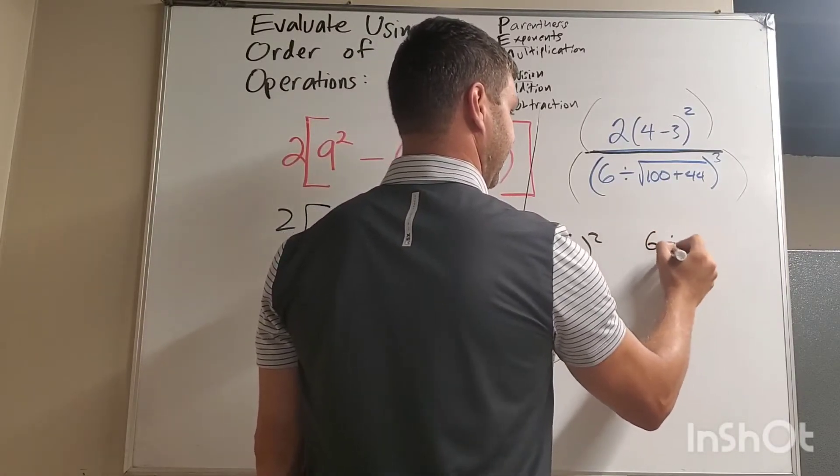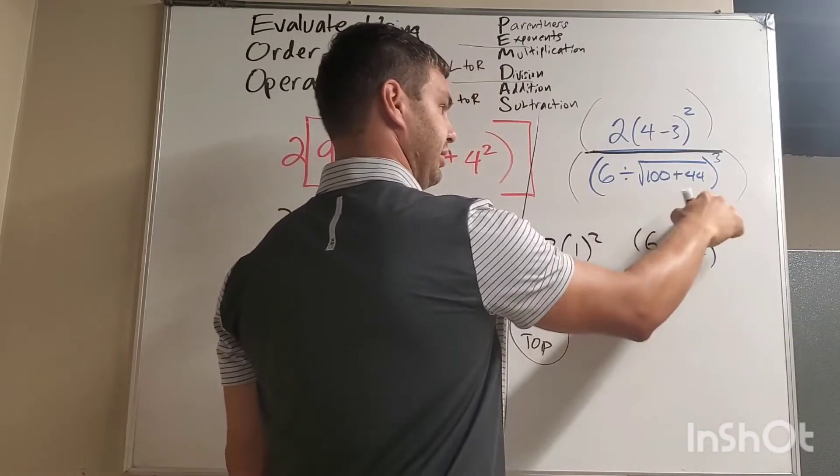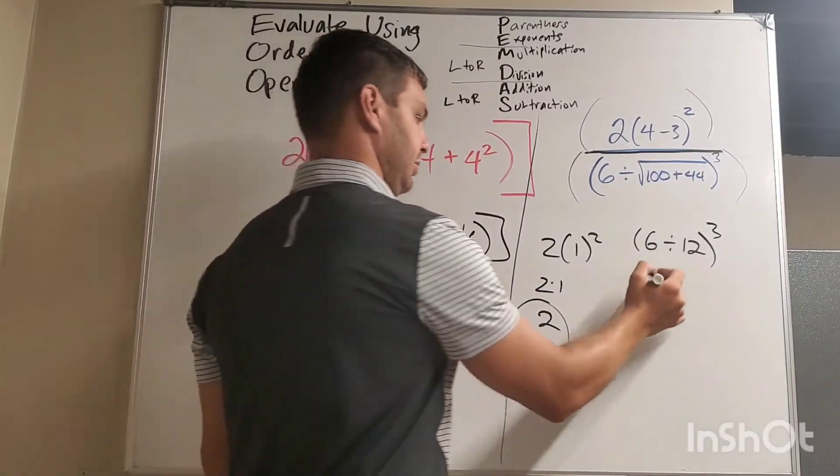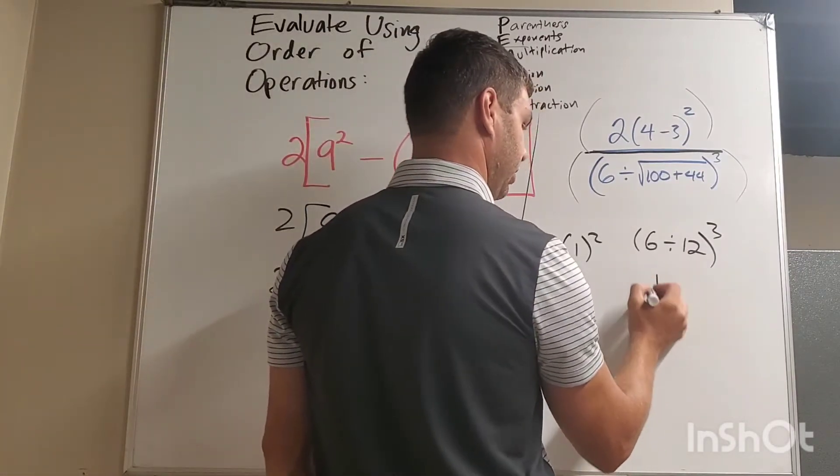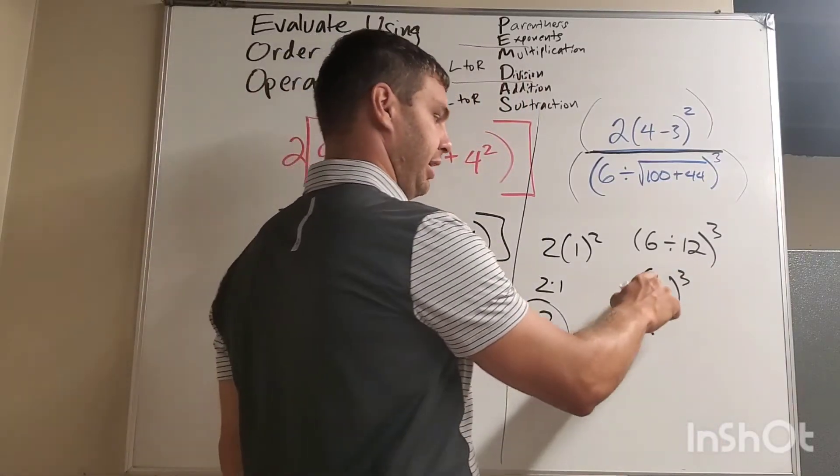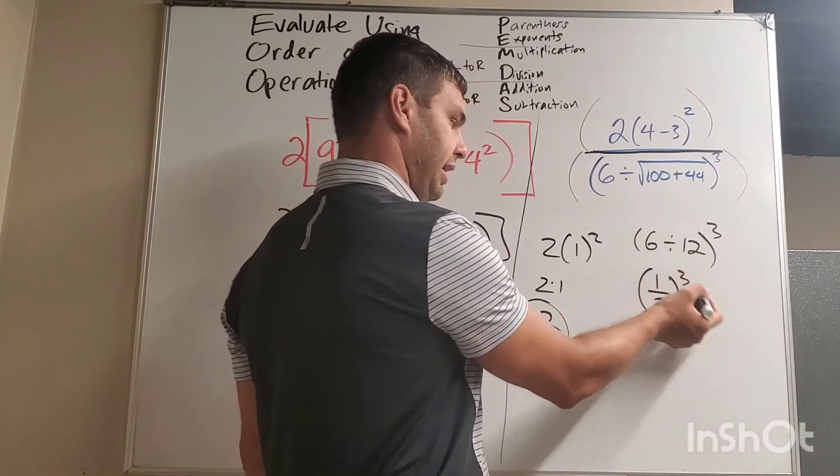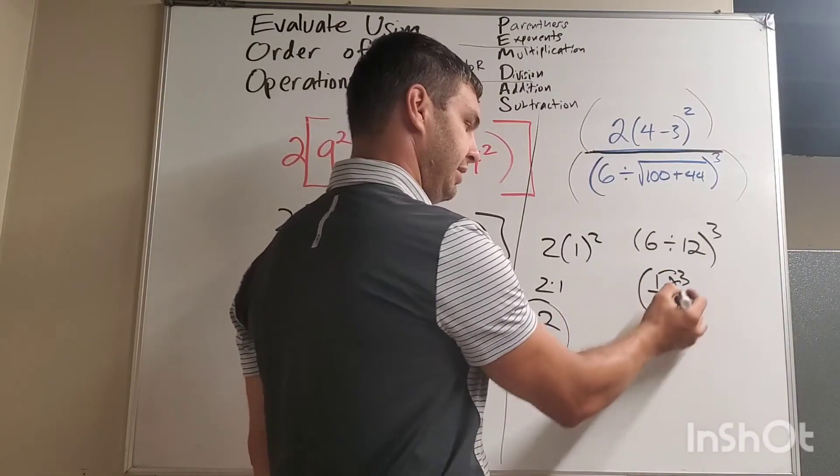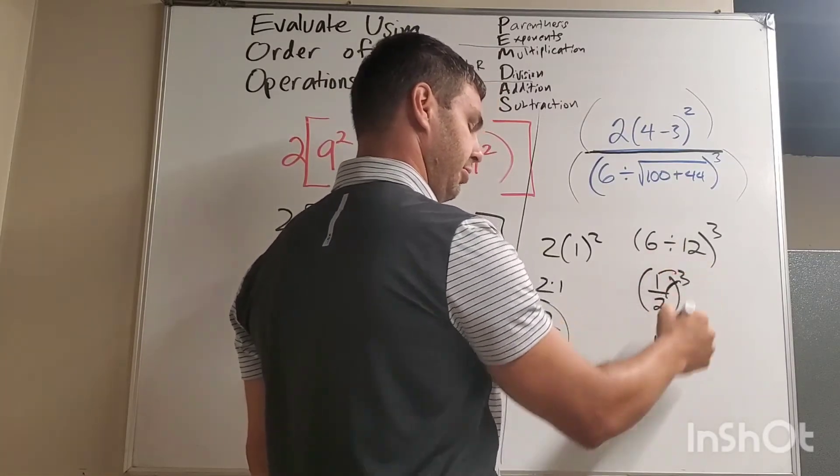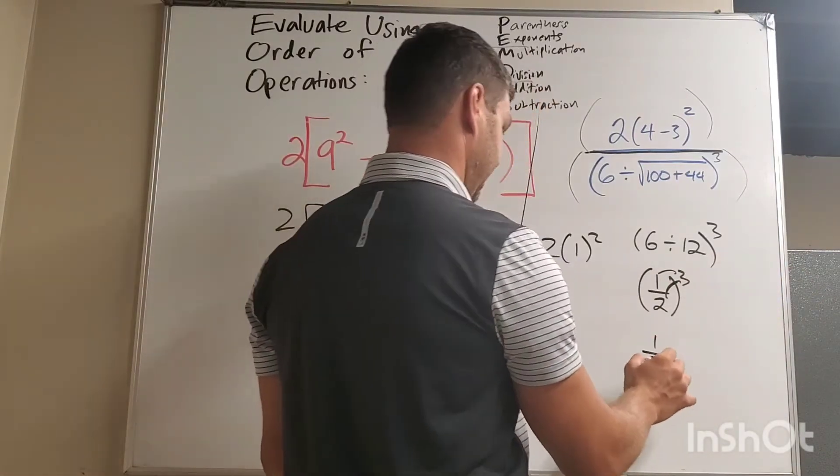So let's see. I have 6 divided by 12 now, and that's still all in parentheses, raised to the third power. 6 divided by 12 is 1 half. Okay, so this could get a little bit interesting. I have 1 half raised to the third power. All right, and you have to remember your fraction facts, that when you have 1 half raised to the third power, this third gets applied to each part inside the fraction. So 1 to the third power is 1, and 2 to the third power is 8. All right, so you have 1/8. This is our bottom.